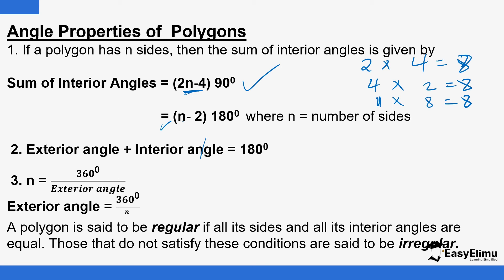n represents the number of sides. For example, the sum of interior angles in a quadrilateral — the four-sided figure — is 360°. You have 4 minus 2 = 2, and 2 × 180 = 360. Even when you look at something like a triangle, whereby the number of sides is 3: 3 minus 2 = 1, and 1 × 180 = 180°. Or if you use the other formula: 3 × 2 = 6, 6 − 4 = 2, and 2 × 90 = 180°.